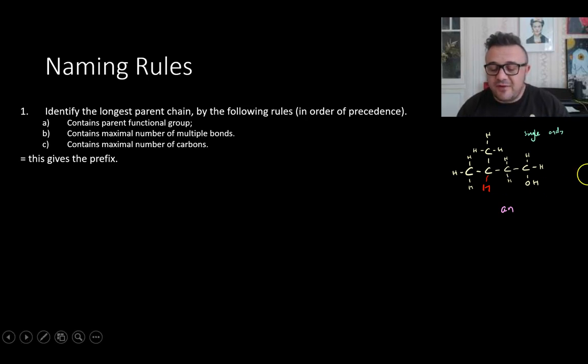We find the parental functional group. Here we have an OH. That's the most important functional group we can see. Okay. Maximum number of multiple bonds. There's no multiple bonds and contains the maximum number of carbons. The first part is functional group, then number of multiple bonds, then carbons.